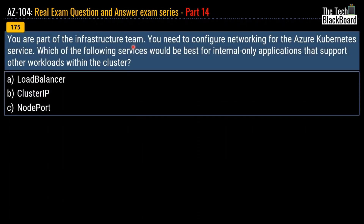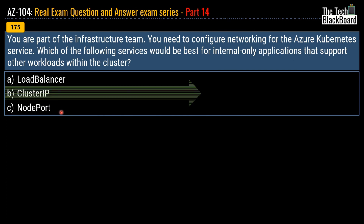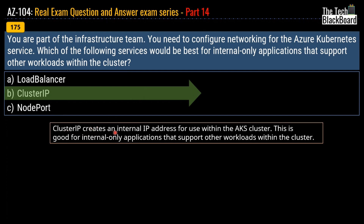Question number 175, the last question for part 14, asks: you need to configure networking for Azure Kubernetes Service. Which service is best for internal-only applications that support other workloads within the cluster? Options are load balancer, cluster IP, or node port. The correct answer is option B, cluster IP. Cluster IP creates an internal IP address for use within the AKS cluster, which is ideal for internal-only applications that support other workloads within the cluster.